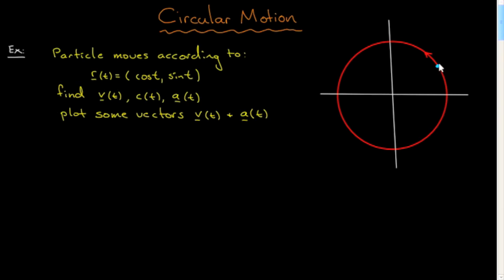This is the particle moving around this path, and the question is simply to find the velocity vector, the speed, and the acceleration vector. I particularly want to emphasize that you're also asked to plot some of these vectors on this diagram.